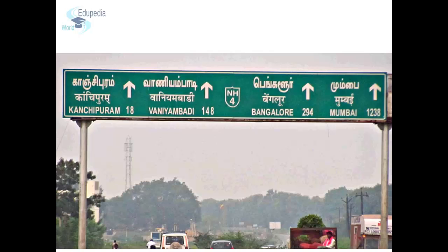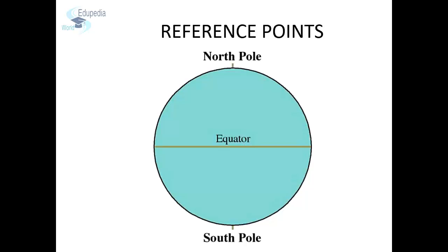The most common reference points on the Earth are the North Pole and the South Pole. Apart from these two reference points, there is another reference point exactly halfway between the poles, through which a horizontal line is drawn that divides the Earth into two equal halves or hemispheres. This reference point is the equator. Using these reference points, two sets of imaginary lines are drawn around the globe.